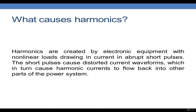Harmonics are mainly created by electronic equipment besides the generator. With nonlinear loads drawing current in abrupt short pulses, those short pulses cause distorted current waveforms, which in turn cause harmonic currents to flow back into other parts of the power system. There are two load classifications: linear loads, where current drawn is proportional to the voltage, such as heaters and motors, and nonlinear loads, where current is disproportionate to the voltage, such as static loads.